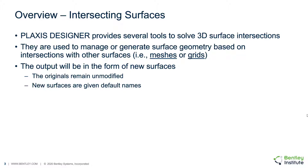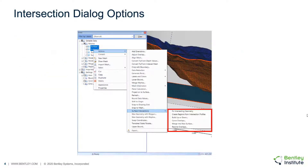The new surface generated will be given a default name that can be changed by the user. The surface intersection functionality can be found by selecting one or more surfaces and then clicking on the Actions and Surface Intersection menu items. This will bring up a list of functionalities related to intersecting surfaces in the software.